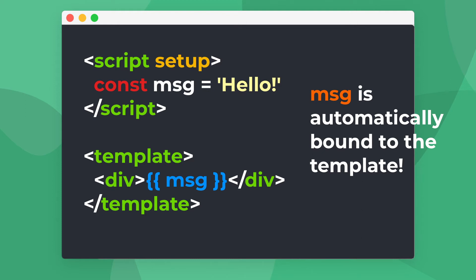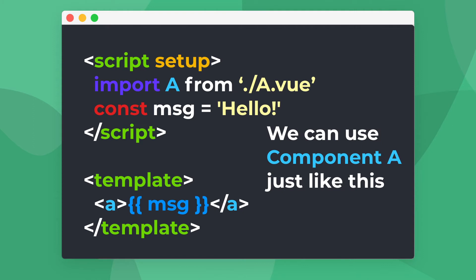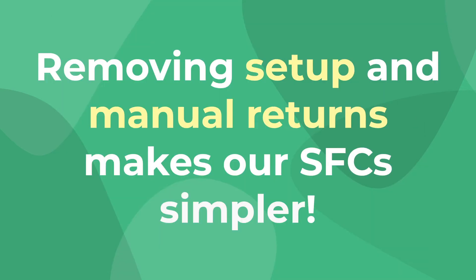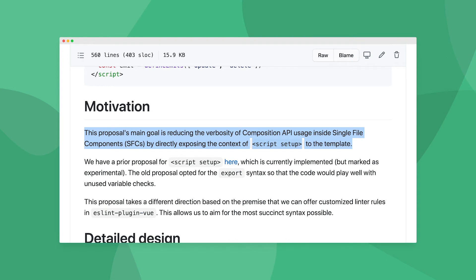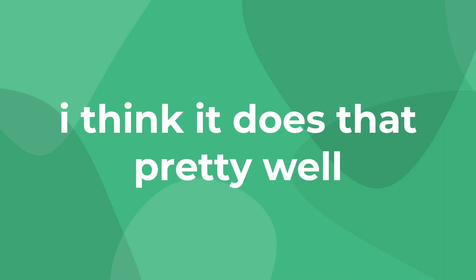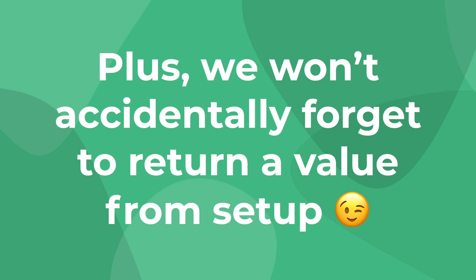But not just that — directives and components that we import into our script are also available in our template. The reason for this is that it makes your single file components so much simpler. In the exact words of the RFC itself, the proposal's main goal is reducing the verbosity of Composition API usage inside single file components by directly exposing the context of script setup to the template. By not having to worry about creating a setup method and returning exactly what we want to expose, we can simplify our code.